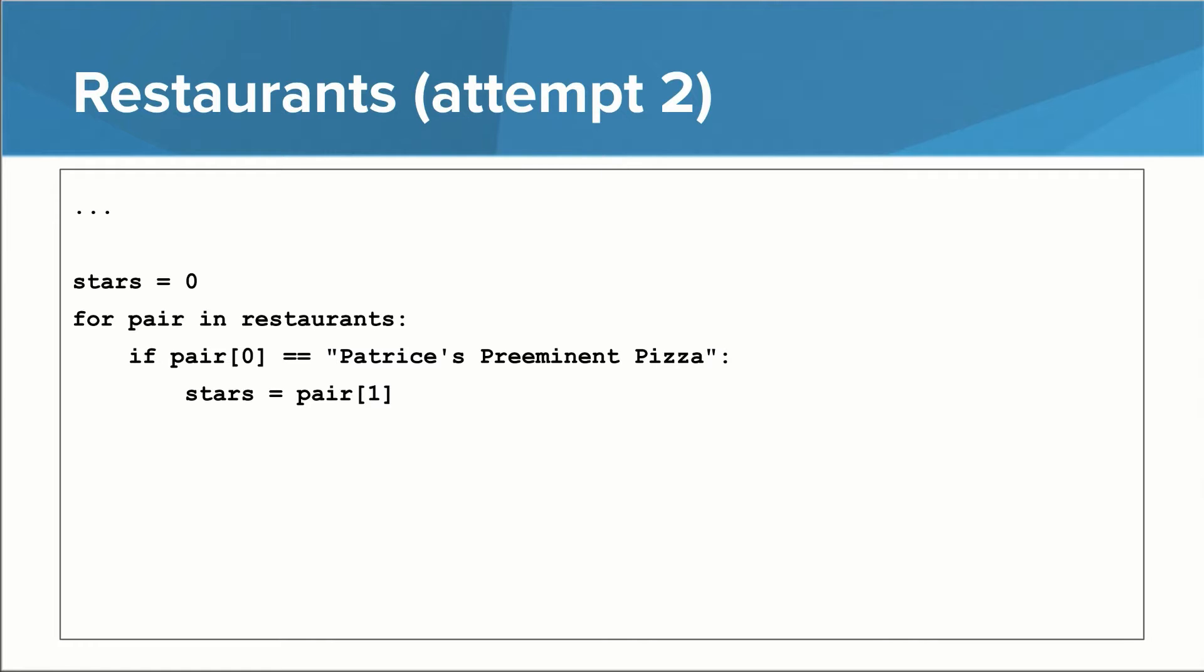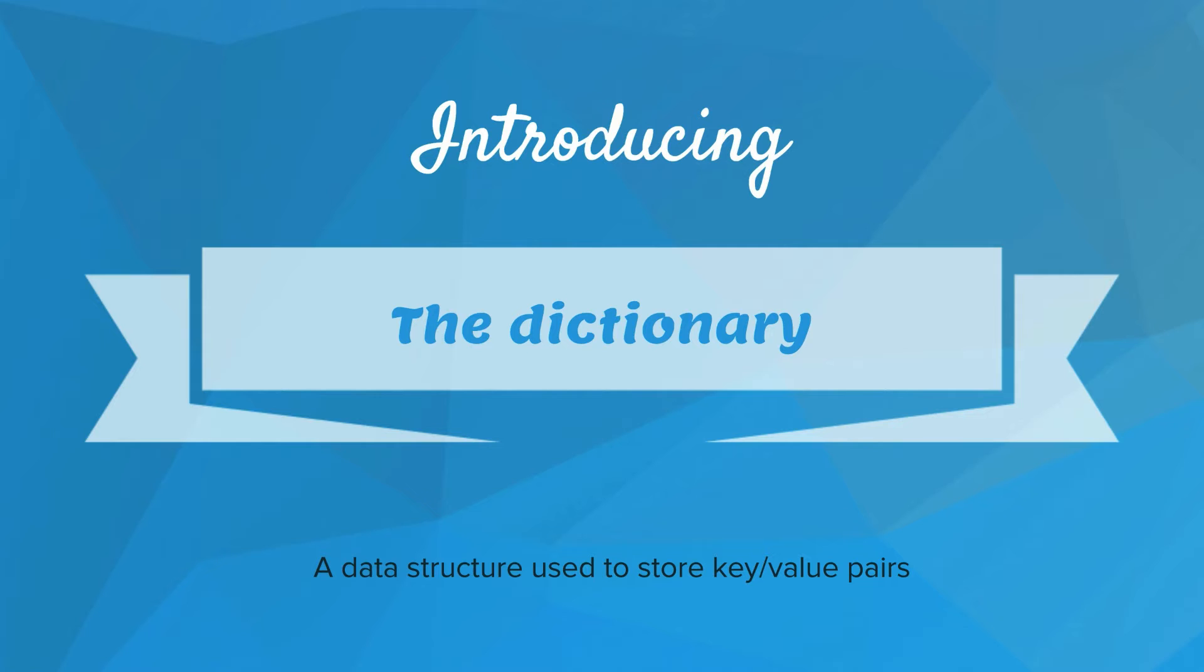What would be great is if we had a data structure where we could look something up by something other than a numerical index? Well, thankfully, Python has exactly that, and it's called a dictionary.